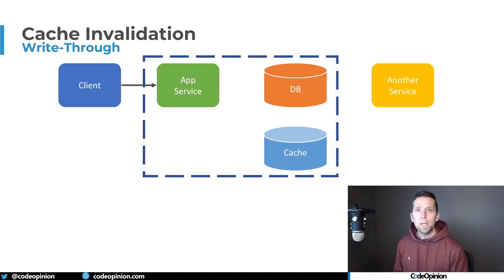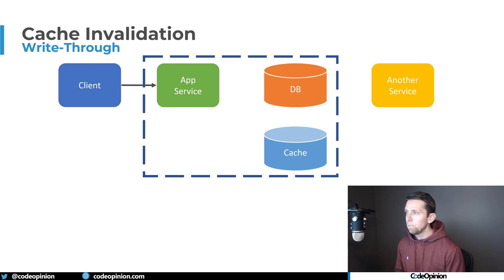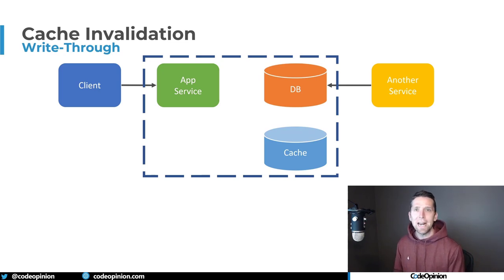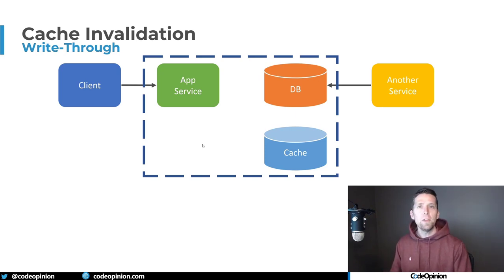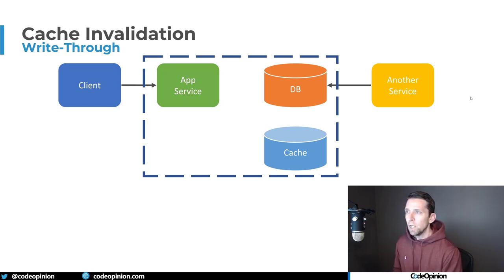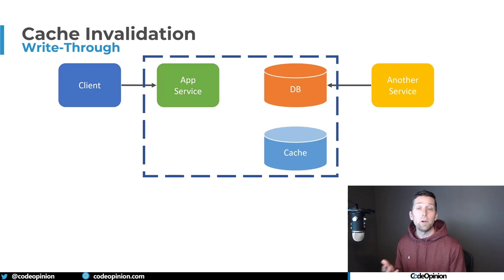Boundaries are really important here because we've defined in our app service that if we make a state change to our database, it's going to update the cache with the write-through strategy. That means every client needs to act the same way. Another service can't just go and access our database directly. This is our defined boundary — our service, our database, our cache — all within a walled garden. We define the API and what we're exposing within our app service, so another service has to behave as any other client. It can't reach out to our database directly; it has to use the APIs we're exposing.